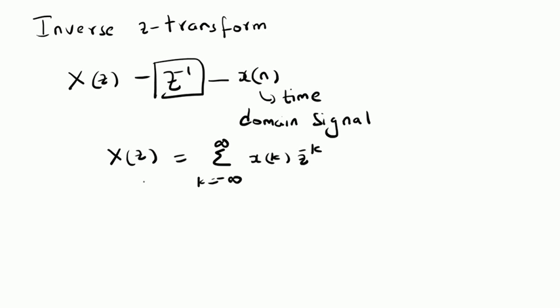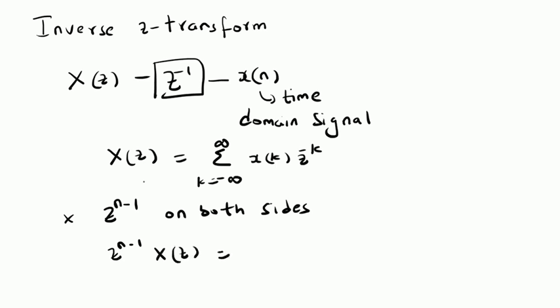We multiply the term Z to the power n minus 1 on both sides. We have Z power n minus 1 times X of Z is equal to Z power n minus 1 times the summation k is equal to minus infinity to plus infinity of X of k times z power minus k.